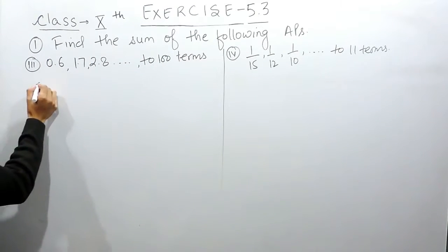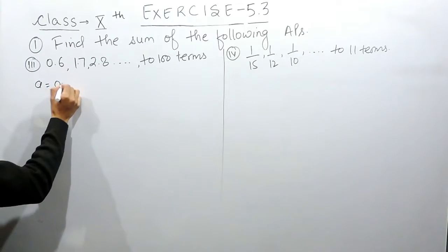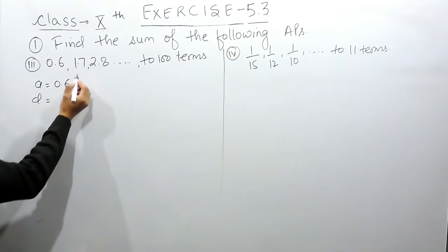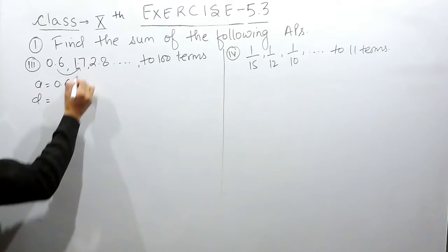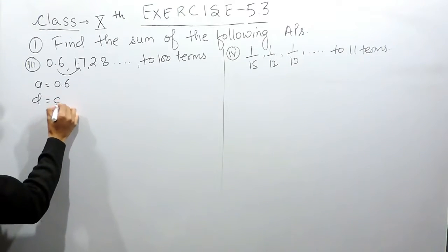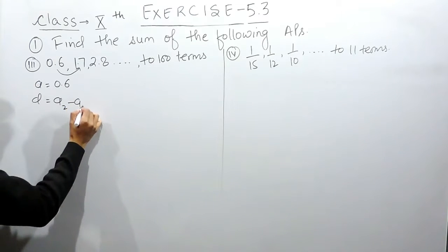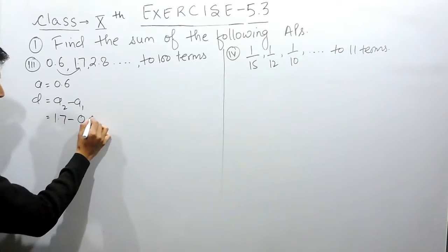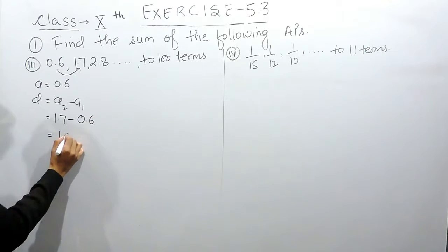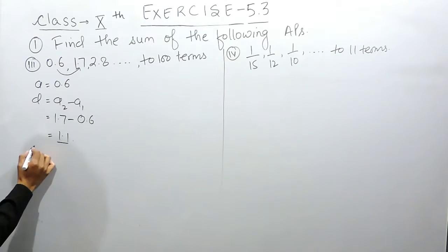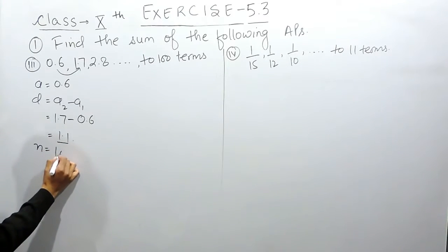In this case the first term is 0.6. The common difference is basically the constant which you are adding. So this is 1.1, or you can find it by subtracting the first term from the second term: 1.7 minus 0.6 equals 1.1. So the common difference is 1.1 and the number of terms is 100.